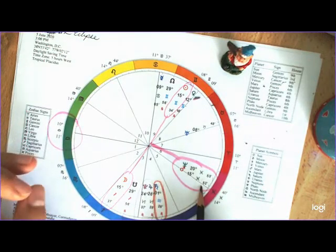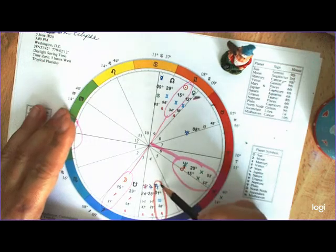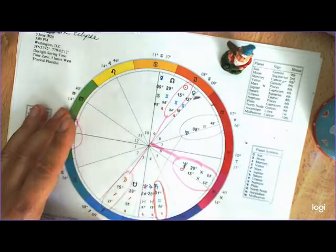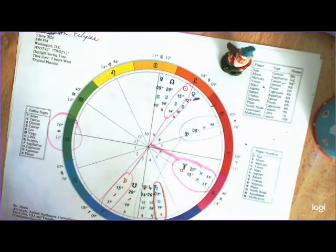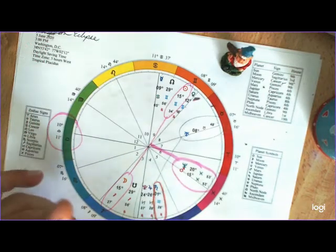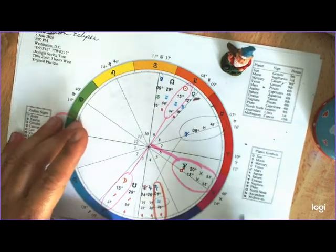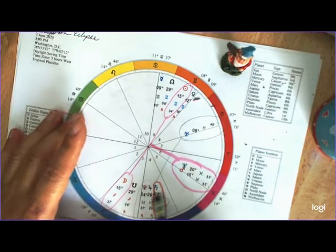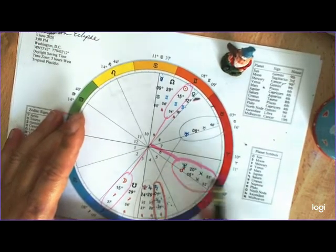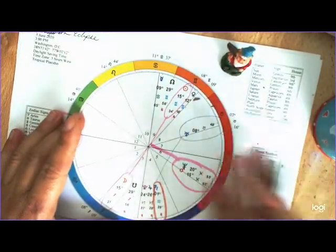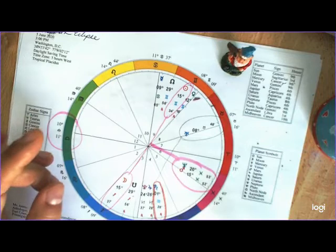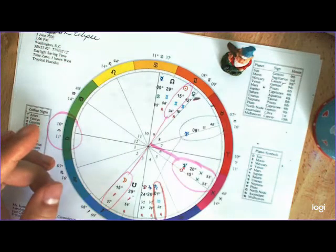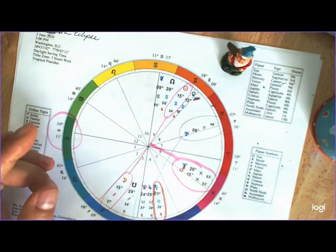Now, while this eclipse is happening, one of the other things that we're looking at is Saturn is going to be squaring its own ruler, Uranus. Well, so let me rephrase that. Saturn is in Aquarius ruling its co-ruler, Uranus. Aquarius is ruled by both Saturn and Uranus. Saturn is the original ancient ruler before Uranus was discovered. And when Uranus came along, little hipster interloper that it is, we sort of assigned Uranus to Saturn and gave Capricorn exclusive rights to Saturn.